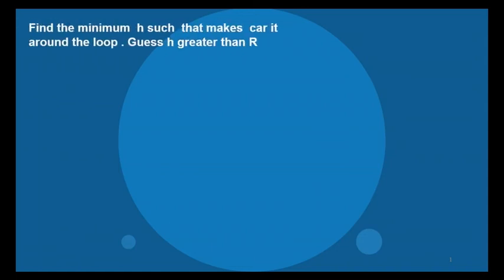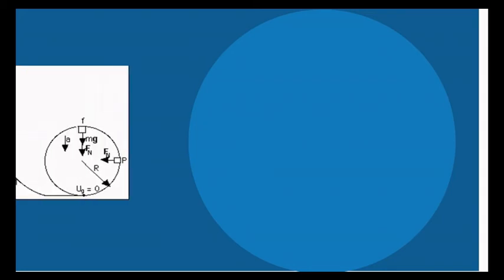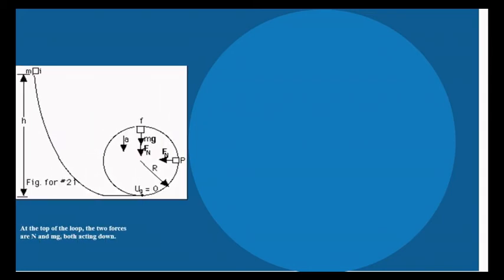Find the minimum h such that makes car it round the loop gets h greater than r. Here to find the minimum h such that makes car it round the loop. At the top of the loop, the two forces are normal and mg both acting down. And kinetic energy equals zero because from initial the velocity equals zero.